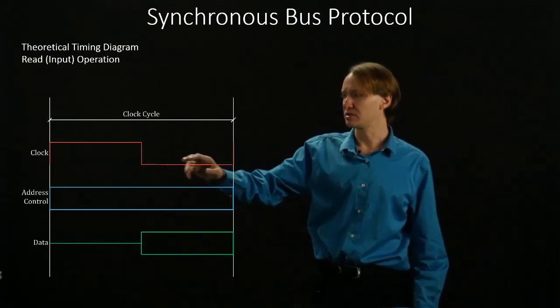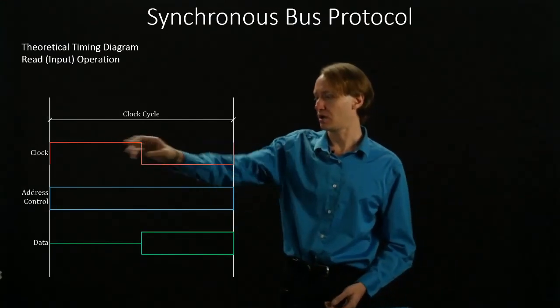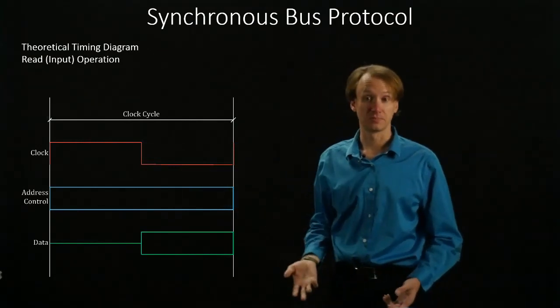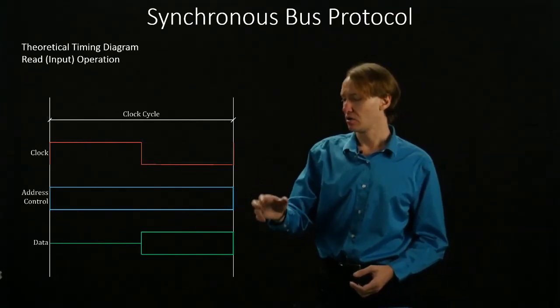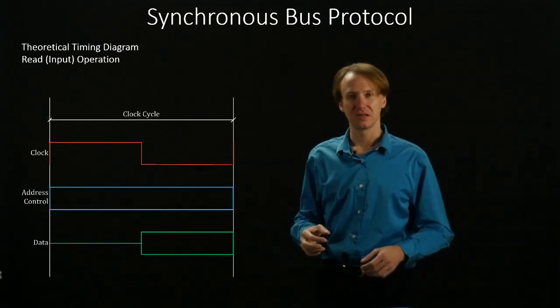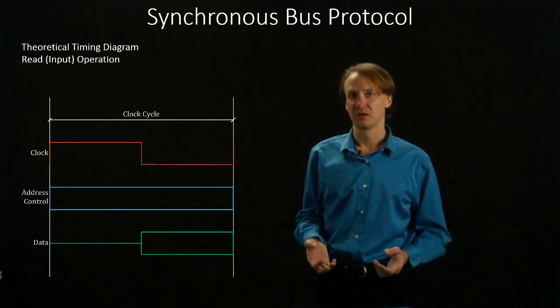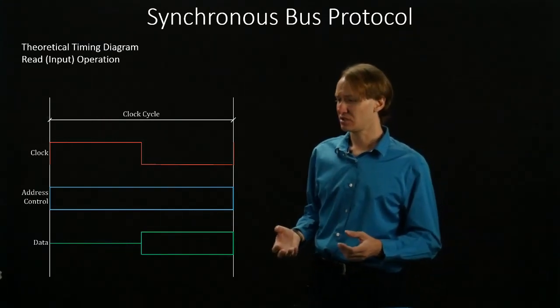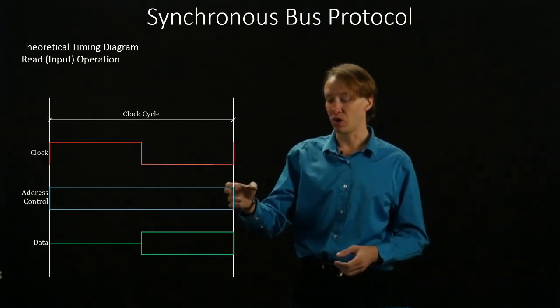Our clock signal has one bit in it, and it changes from high to low during the cycle. Most of the other information on our bus is going to have more than one bit. And we're actually not really concerned with whether those bits are zero or one.